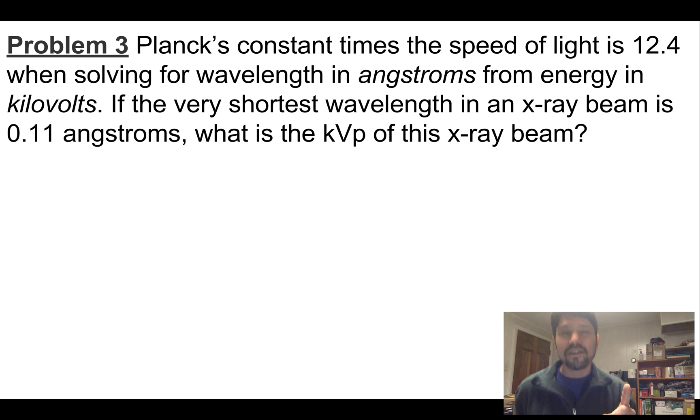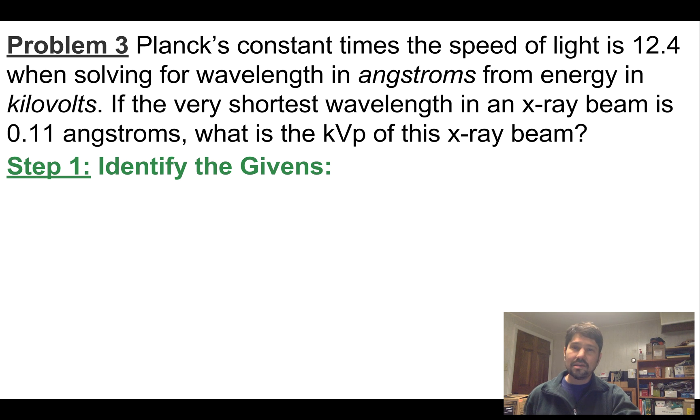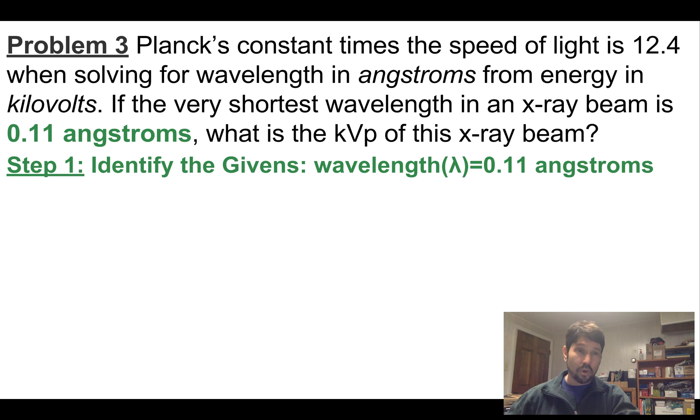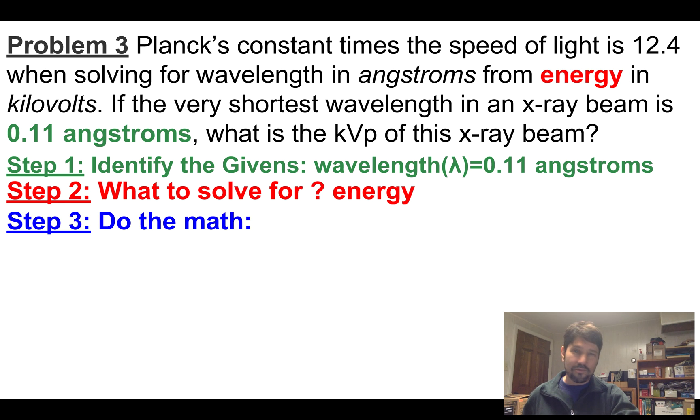Question three. Question three looks harder, but it's actually easier, so stick with me. Planck's constant times the speed of light is 12.4 when you're solving for wavelength in angstroms from energy in kilovolts. If the shortest wavelength in an x-ray beam is 0.11 angstroms, what is the kVp of this x-ray beam? We haven't gotten there yet, but kVp is the maximum kilovoltage, and you're going to see that with the minimum wavelength because frequency and wavelength are inversely related. So we'll identify our givens. Wavelength is 0.11 angstroms, and what are we solving for? Energy.